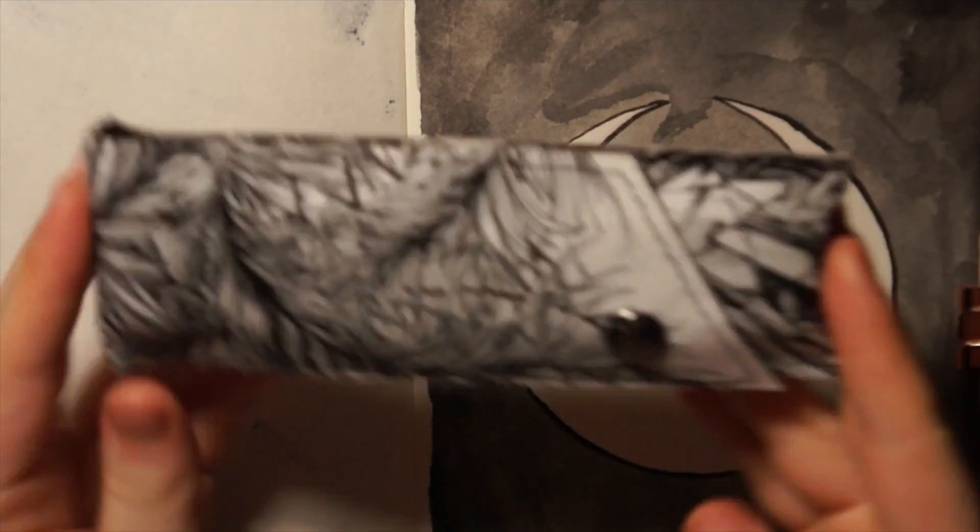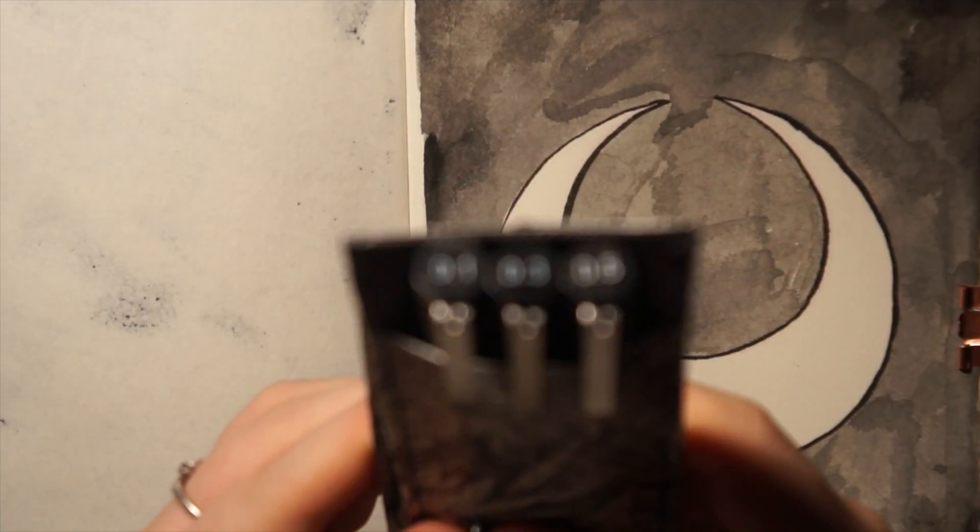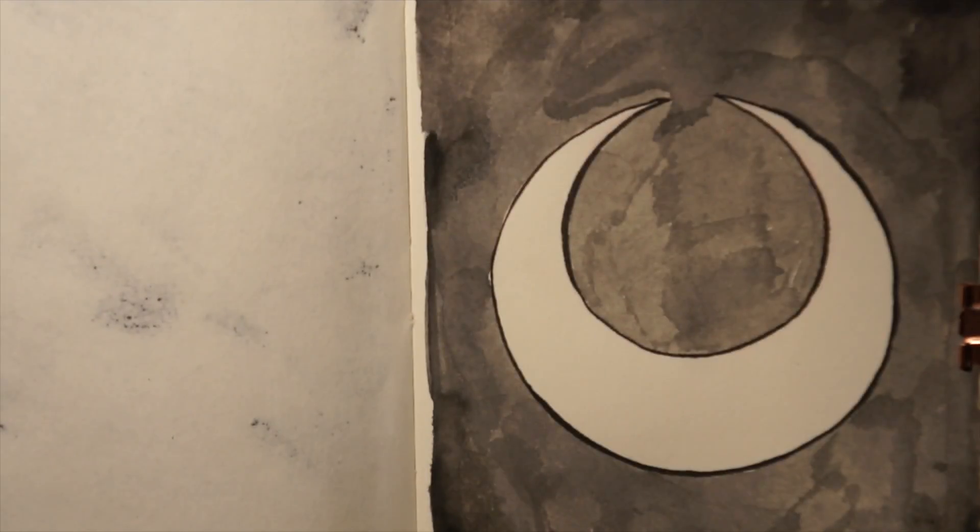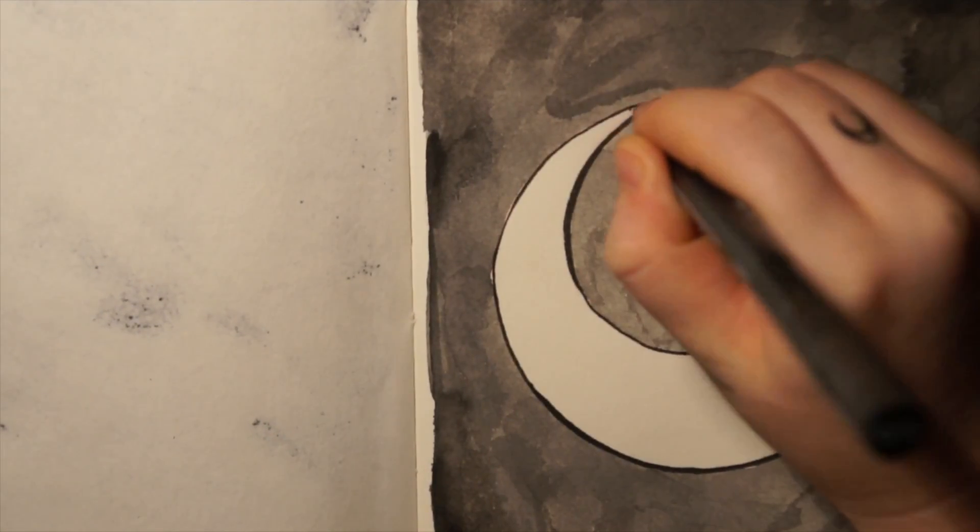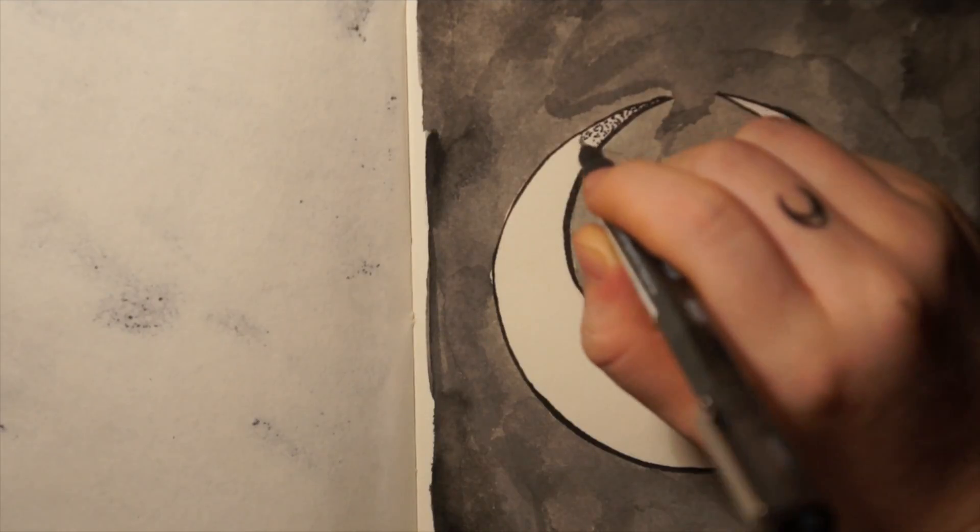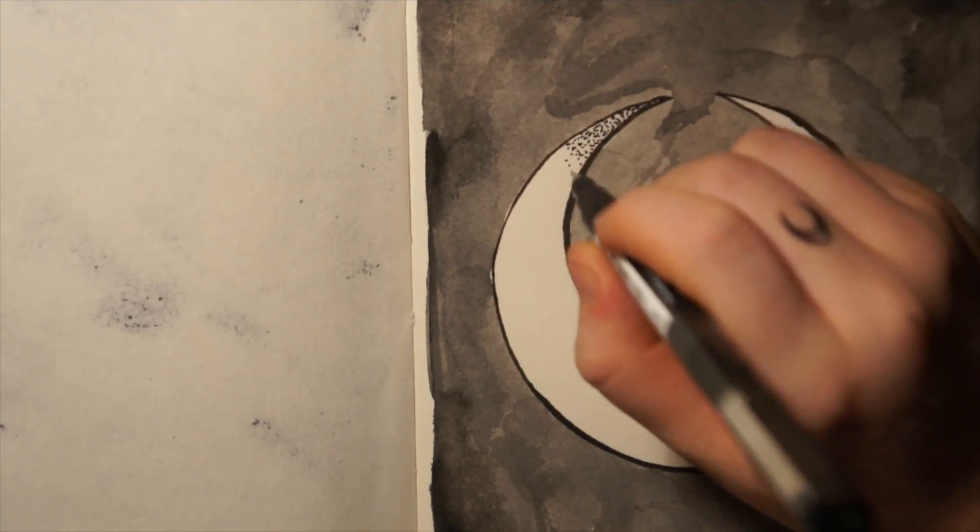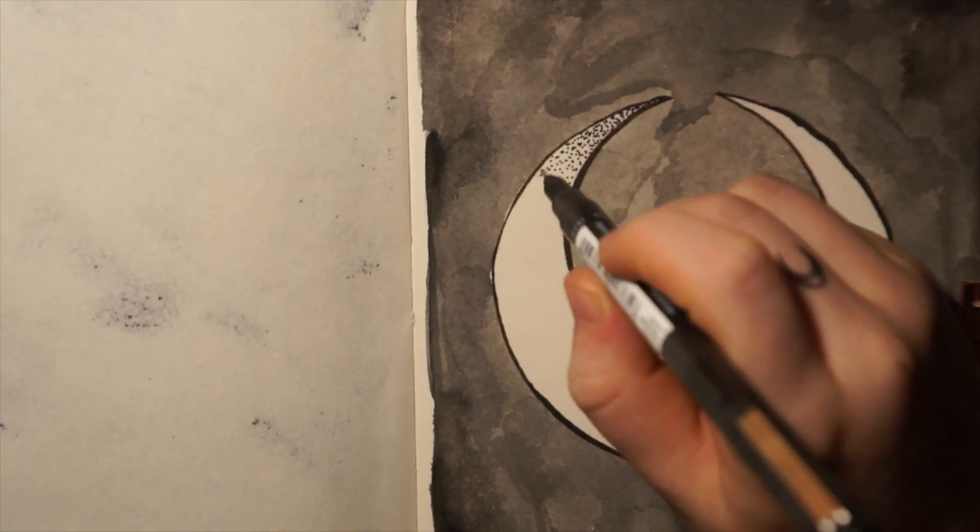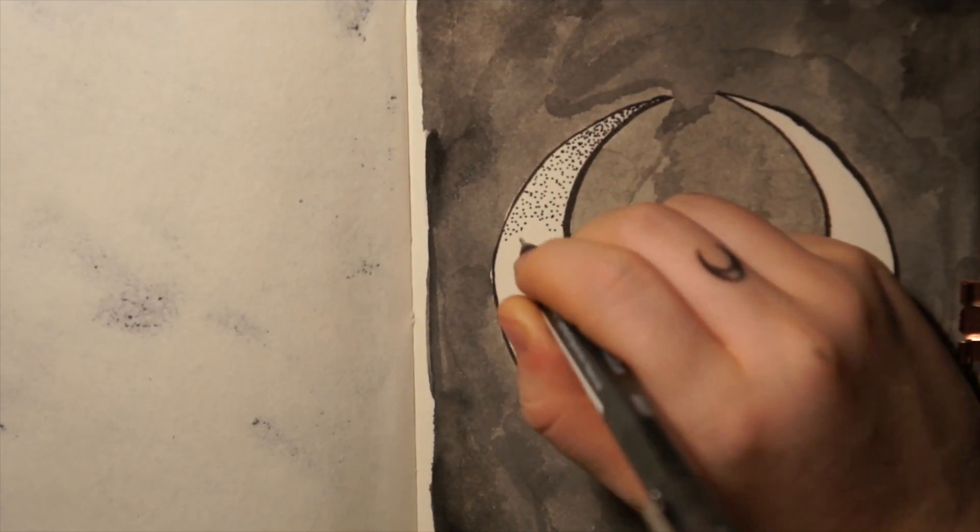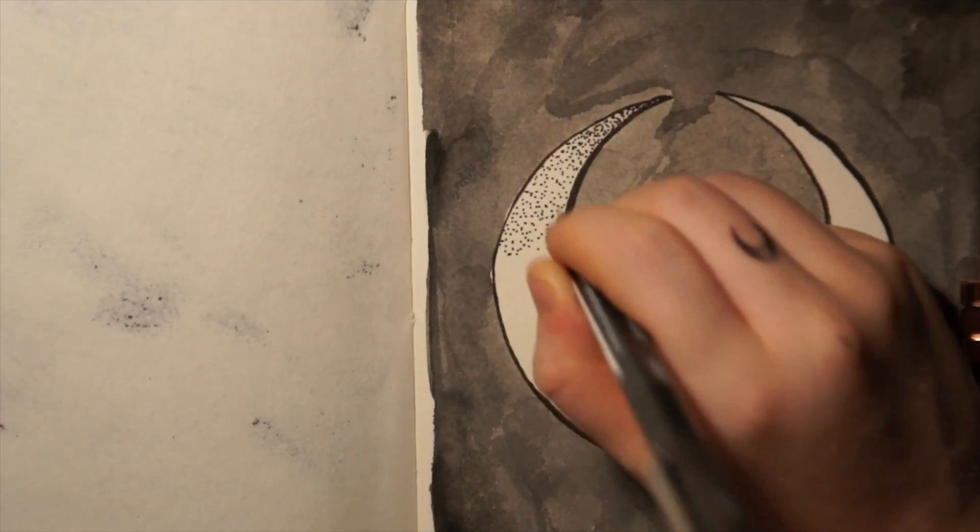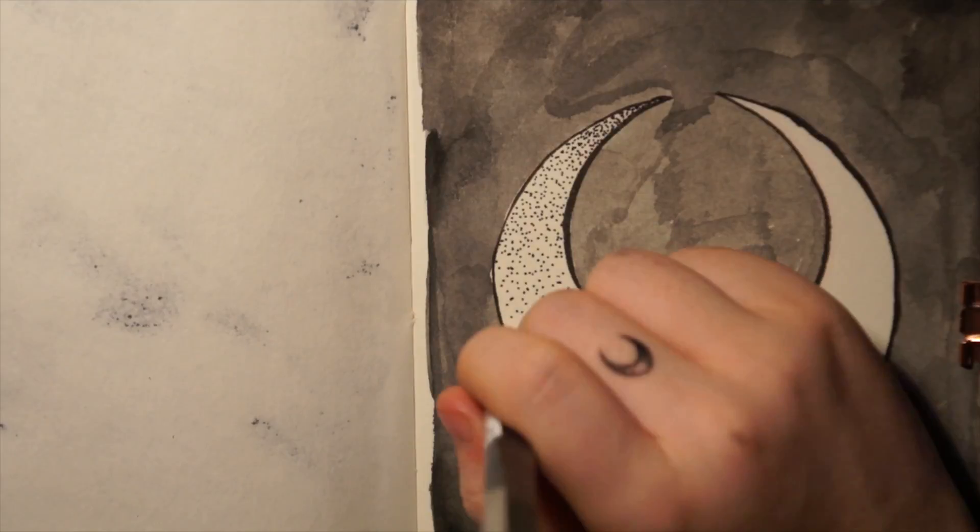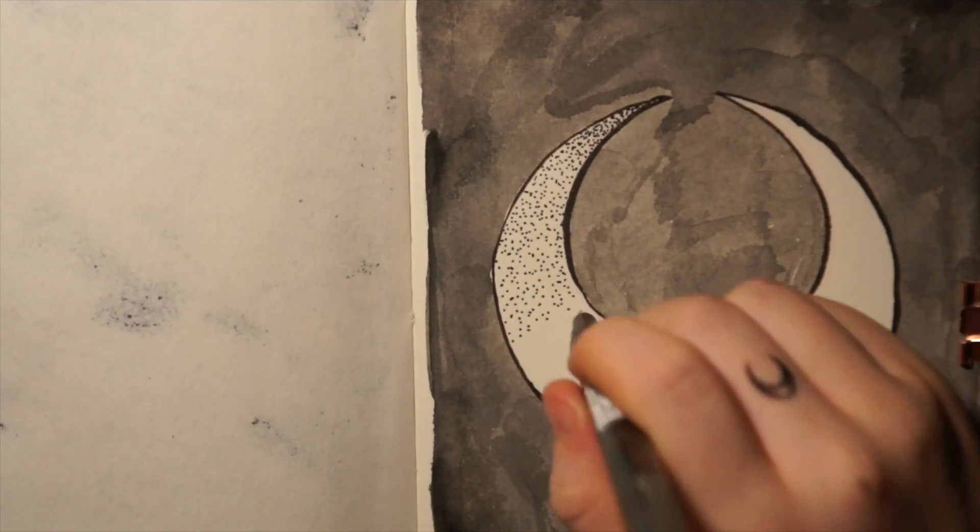And you can see here this is where I start. I think these are Derwent, they're the line maker pigment markers and I'm using that one. I think this is the 0.3, they come in a set 0.5, 0.3 and 0.1. I'm just trying to hold it as upright as I possibly can because the one mistake that people always make when doing pointillism or dot work is that they hold it to the side.